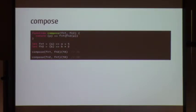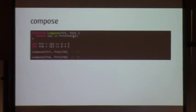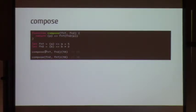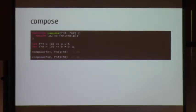The order of composition matters. If we compose FN1 and FN2 and call with 10, it produces 25. If we flip them, we get 30 — because the order of evaluation differs. So the order in which you pass functions to compose matters — keep that in mind.